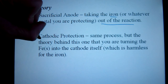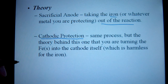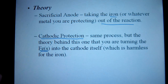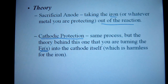Another approach is cathodic protection — very similar, but instead of adding a sacrificial anode, a different metal, you actually use an electric current and force that current to the iron, to the steel hull or steel pipe, which therefore turns it into a cathode. As you may recall from earlier in this unit, electrons always want to go to the cathode, and reduction takes place at the cathode — and that is harmless to the iron.